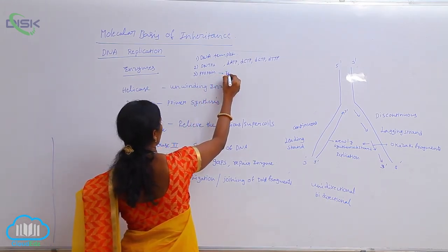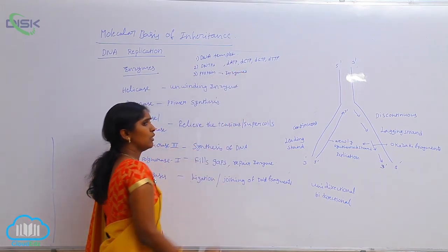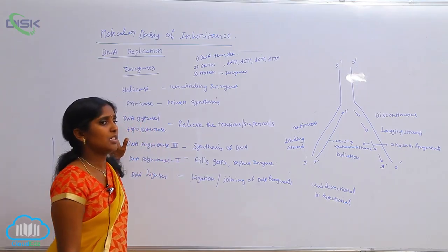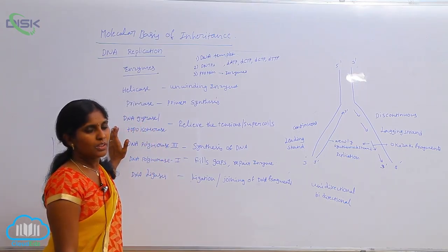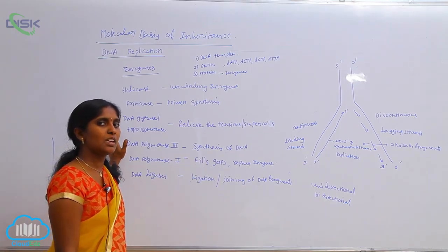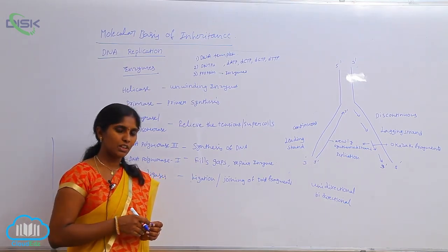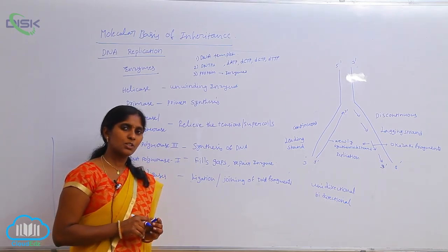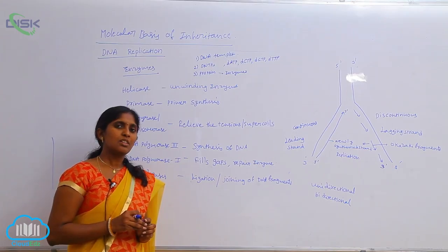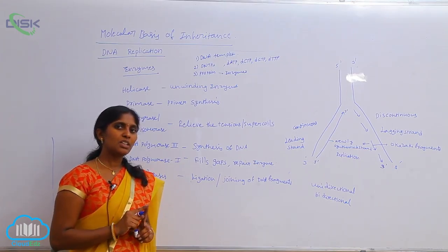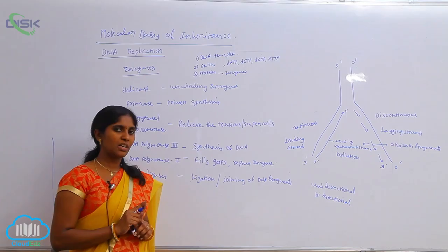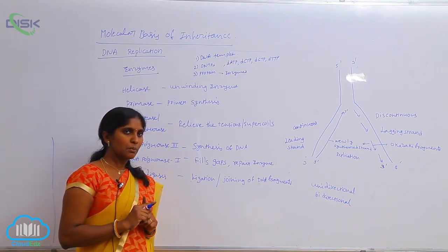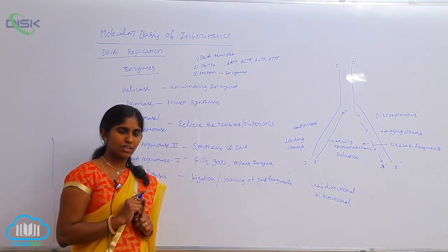Proteins are in the form of enzymes. The different enzymes involved in replication and their functions are as follows. First, the helicase enzyme: helicase works for the unbinding of DNA. Since DNA is a double helical structure — a double-stranded DNA — the double-stranded DNA must first unwind into two single strands. For this unbinding purpose, helicase enzymes work.